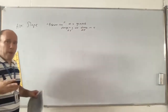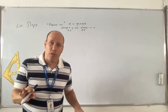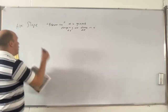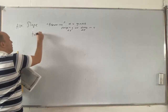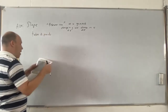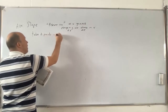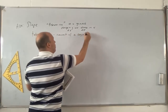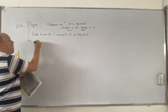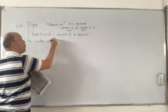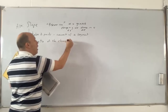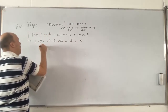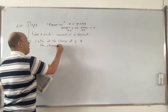Please remember we're in the geometry unit. We're on graph paper. When we talk about slope between two points, we're on graph paper for now. You're going to take two points and connect them with a segment. The slope is the ratio of the change of y to the change of x.